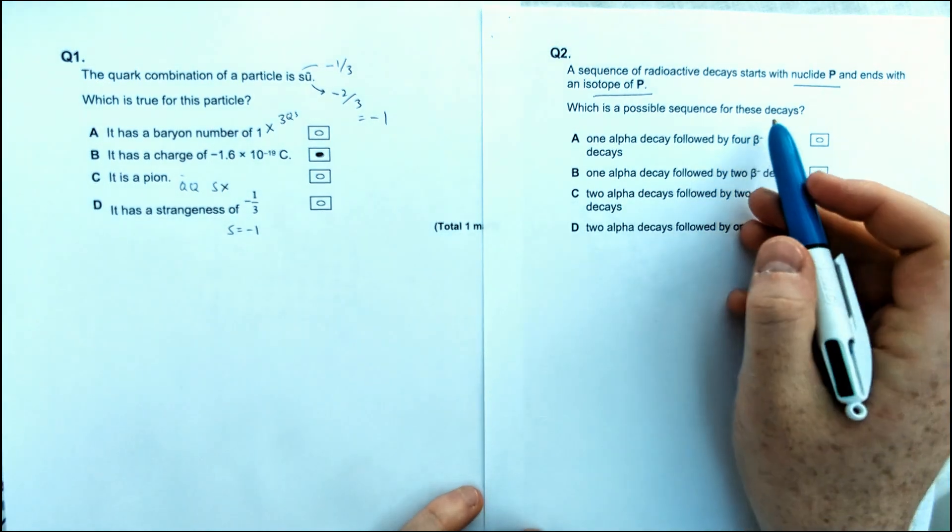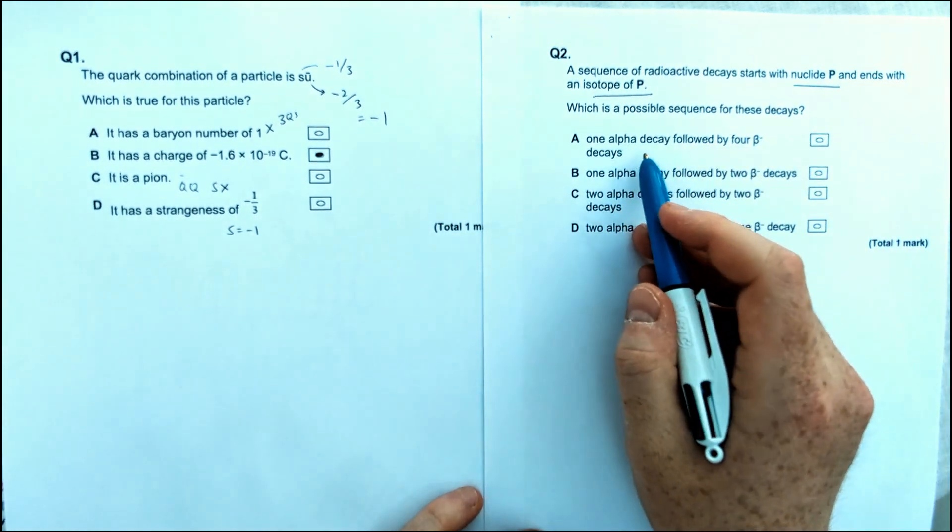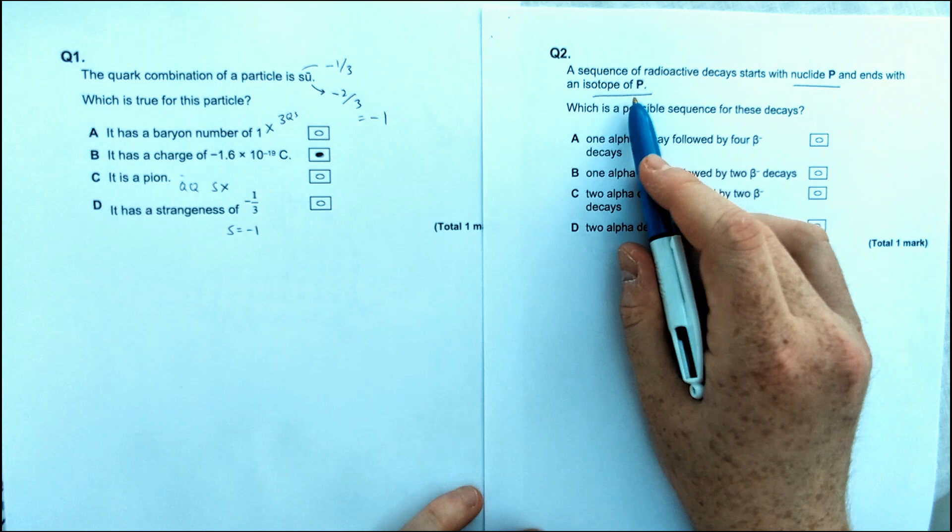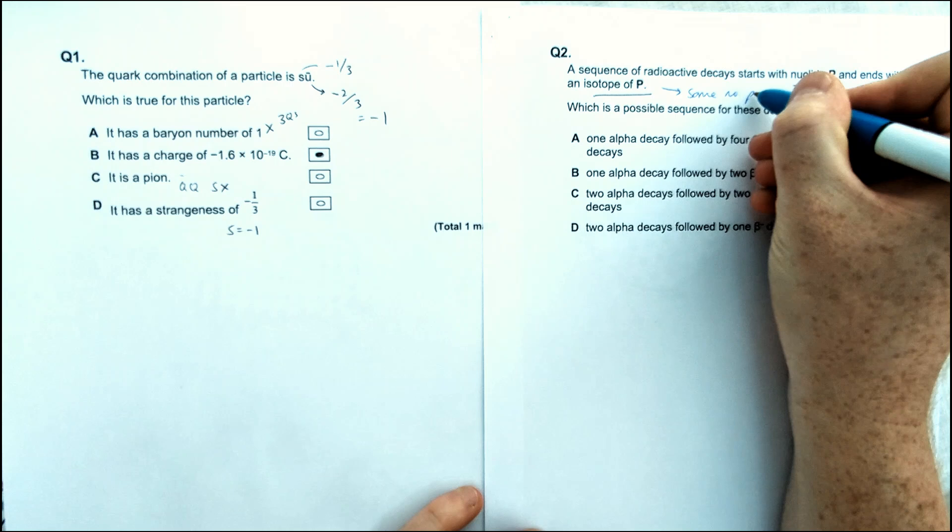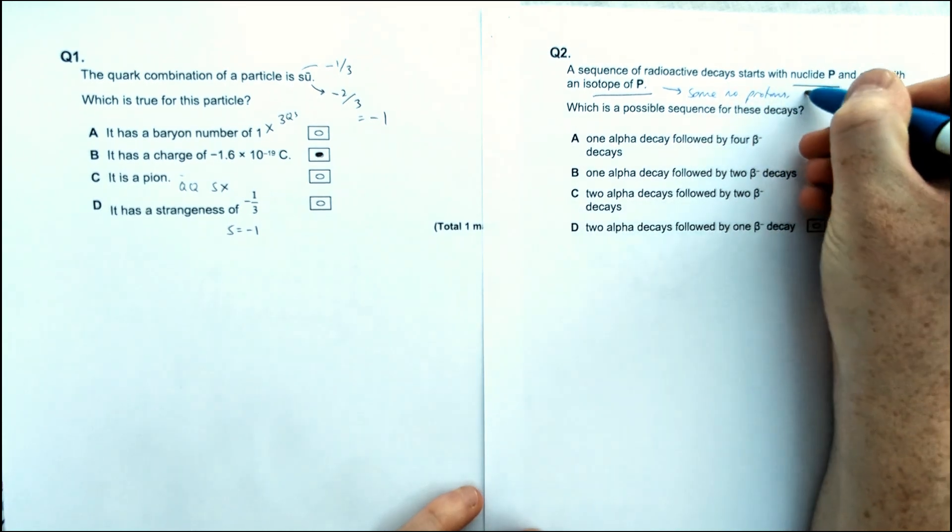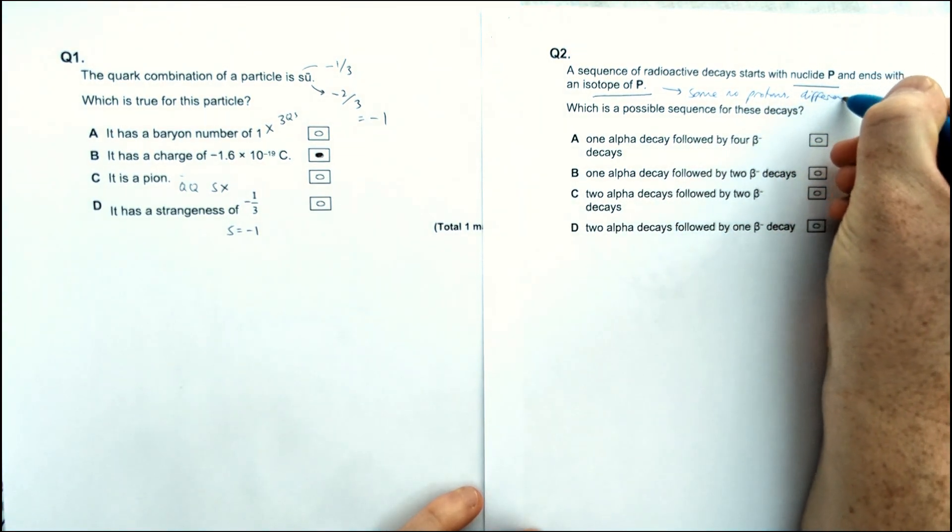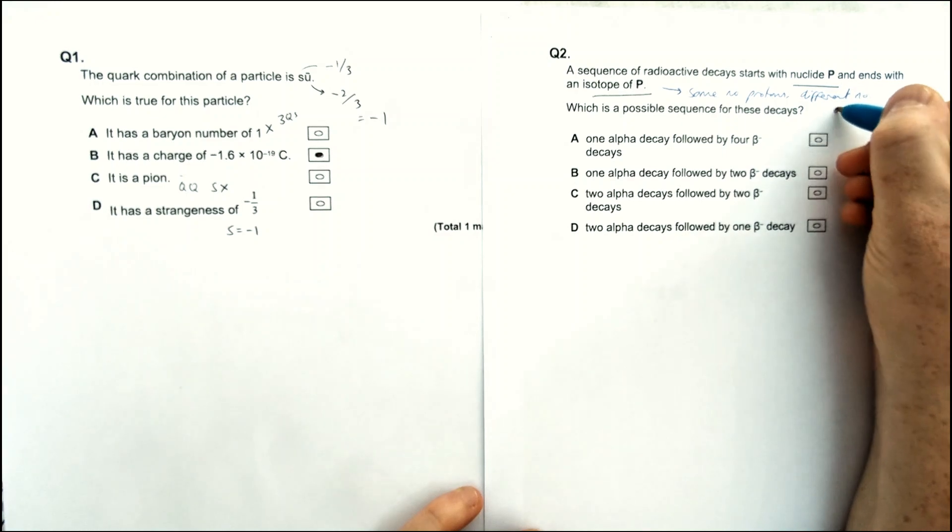So which is the possible sequence for these decays? Basically you have to go through one at a time again and figure out which one's going to end up with an isotope, meaning same number of protons but a different number of neutrons.